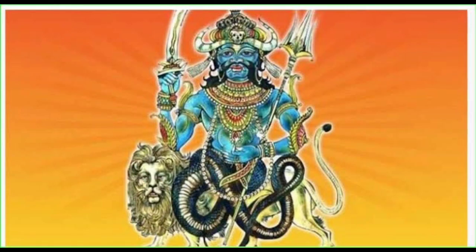Before we proceed further, let me give a very brief introduction about what exactly Rahu is. Rahu and Ketu are actually nodes of the moon — the points of intersection of the moon's orbit with the earth's orbit and the sun's orbit. These are points of immense darkness, and therefore they are also known as Chaya Grahas or shadow planets. Rahu and Ketu bring about intense effects and intense changes in the personalities of human beings.